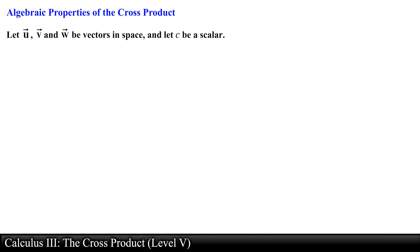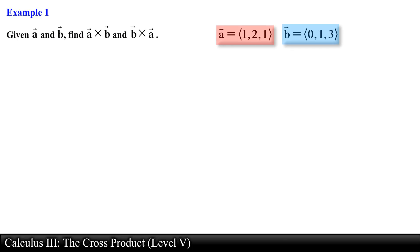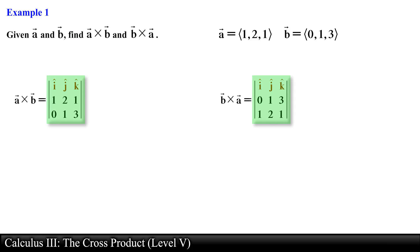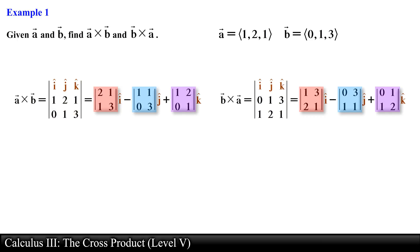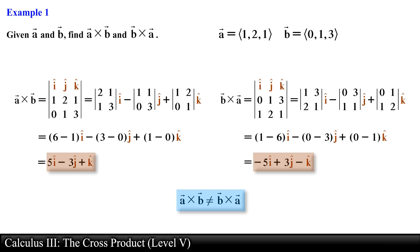Let's go over a couple of examples using these algebraic properties. Given vector a and vector b, find vector a crossed with vector b and vector b crossed with vector a. We use the component definition of the cross product, setting up our 3×3 determinant and finding the minor for each component, then computing the determinant of each 2×2 matrix and simplifying. Notice that the cross product is not commutative — in fact it is anti-commutative — which was one of the algebraic properties.